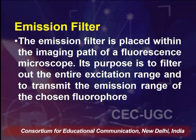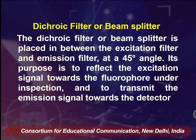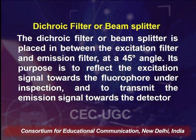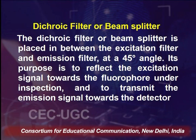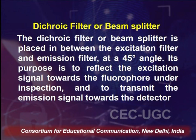The emission filter is placed within the imaging path of a fluorescence microscope. Its purpose is to filter out the entire excitation range and to transmit the emission range of the chosen fluorophore. The dichroic filter or beam splitter is placed between the excitation filter and the emission filter at a 45-degree angle. Its purpose is to reflect the excitation signal towards the fluorophore under inspection and to transmit the emission signal towards the detector.